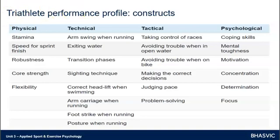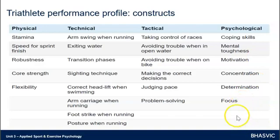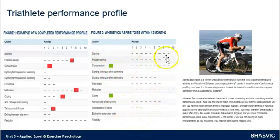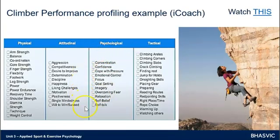Here is an example of a triathlete's performance profiling — you can see they've got various aspects. But remember, we're in a psychology unit, so you must incorporate psychological qualities and skills. These are the ones identified as being relevant to a triathlete, along with an example of the athlete's performance profile where they rate themselves, plus aspirational targets. There's also a quick example of a climber — different psychological qualities and skills perceived as key to success in climbing.